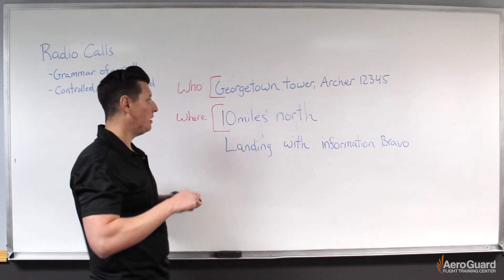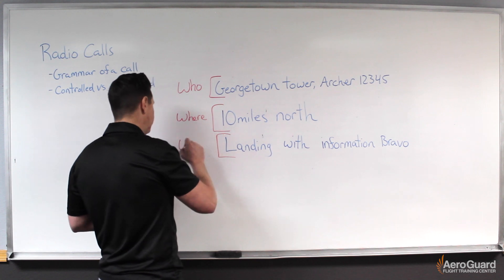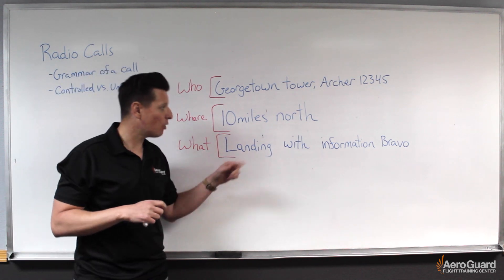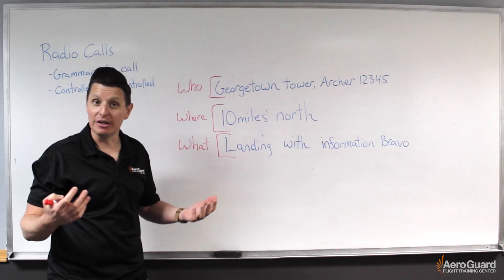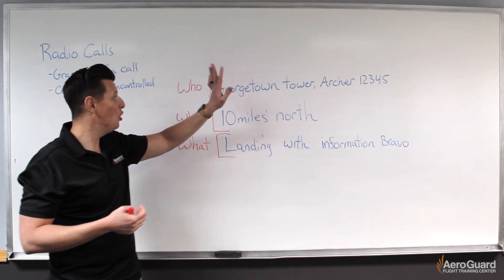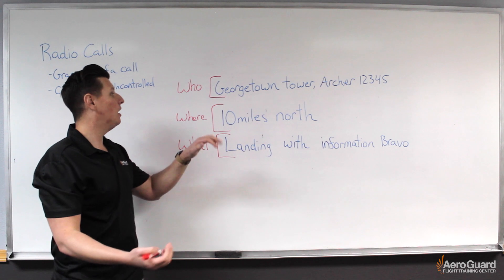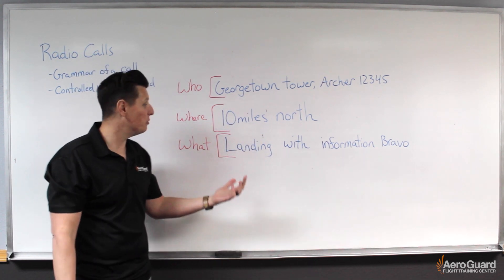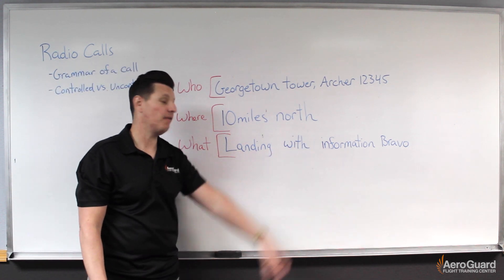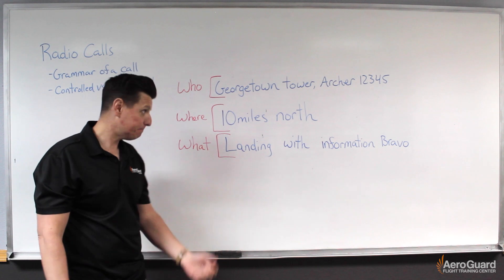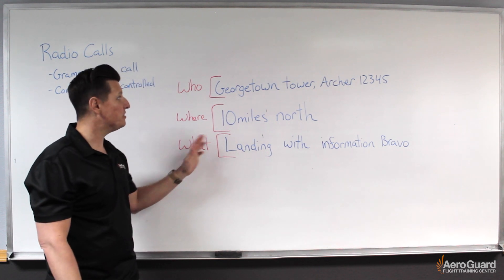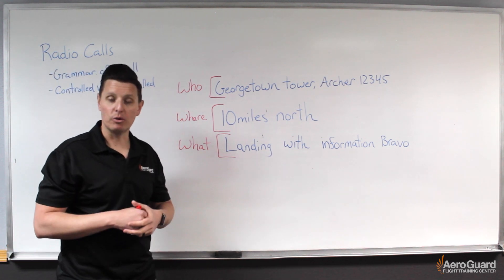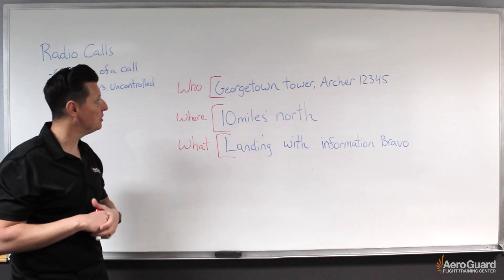The last section is the 'what' — describing why we're making this call. So we've gone through who we're talking to, who we are, where we are, and then what our intention is. In this example, we say we're going to be landing and we have the ATIS information, Bravo. This is how the who, where, what grammatical structure is broken out in radio calls.